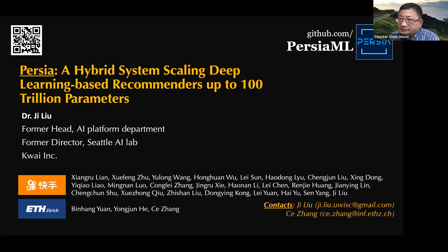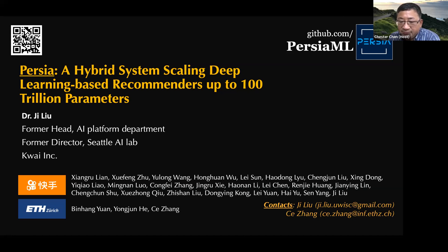Today we have a very special topic. Dr. Jay Liu is our special guest — PhD in computer science, has worked as a professor in academia and then joined several Chinese technology companies, including Tencent. Recently, he's the head of the AI lab for the second largest short video company in China, called Kuaishou. They have a US branch in Seattle, and he's the head of it. Today he's talking about how to scale deep learning-based recommender systems with a hundred trillion parameters.